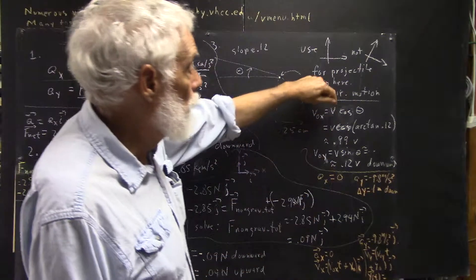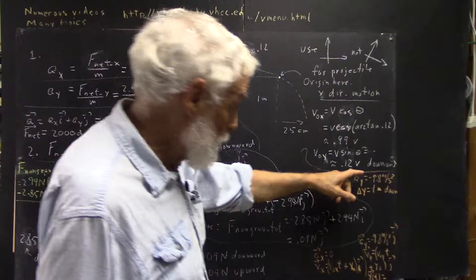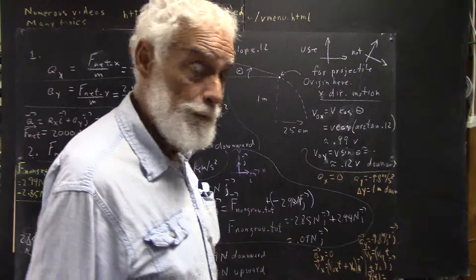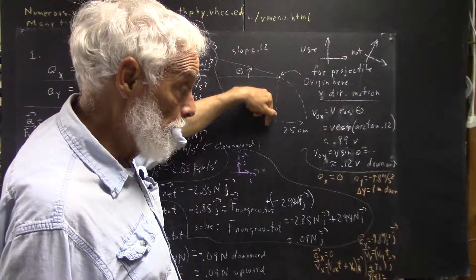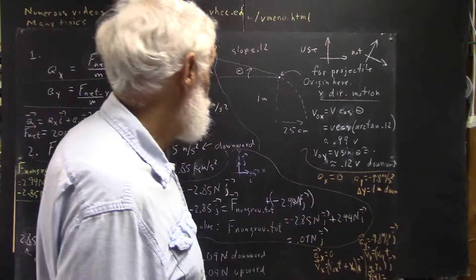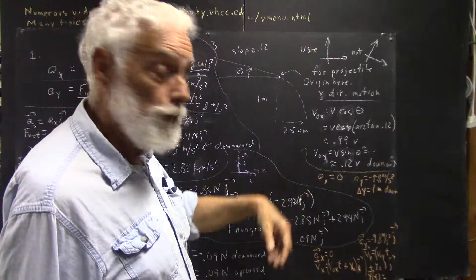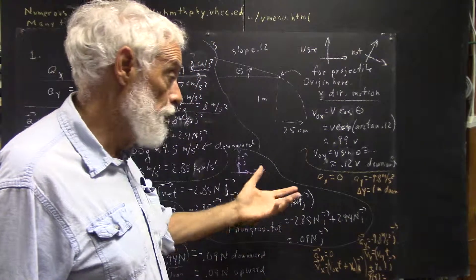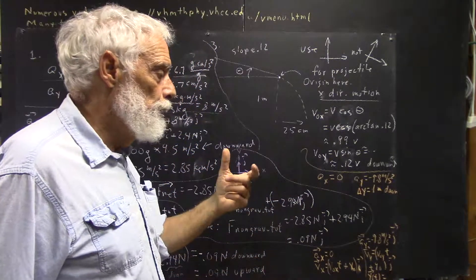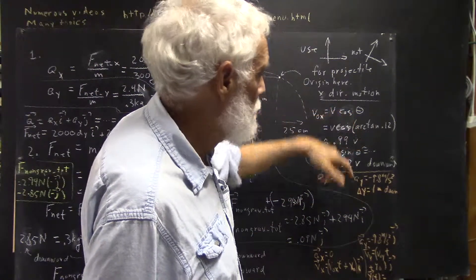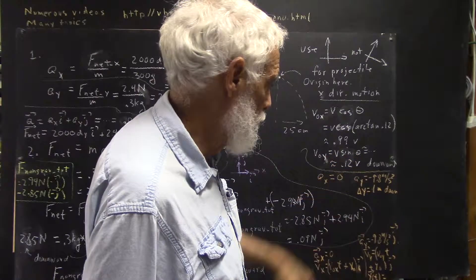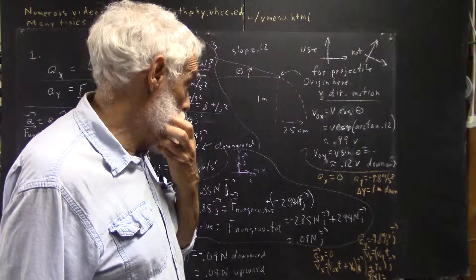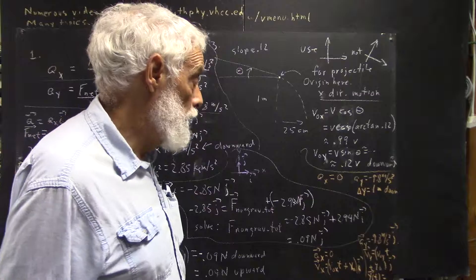In the y direction you have your acceleration, so you can write down your y function. You can solve the x equation for t, but you don't know the actual v₀y or v₀x — you only have v cosine theta. So your solution for the time of fall — the time it takes to go 25 centimeters horizontally — is going to involve both v and cosine theta.